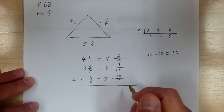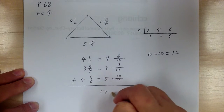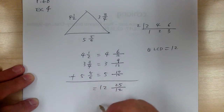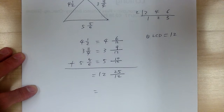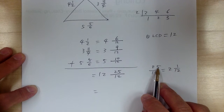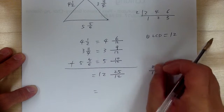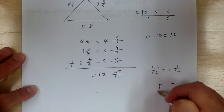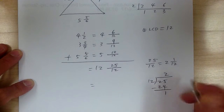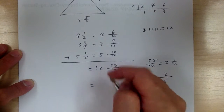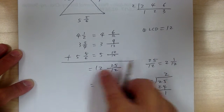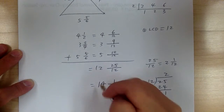Now add the whole numbers: 4 plus 3 is 7, plus 5 is 12. For the fractions: 6 plus 9 is 15, plus 5 is 25. So you have 25 over 12. Since 25 divided by 12 equals 2 remainder 1, that is 2 and 1 twelfth. The whole number fraction becomes 1 over 12 and the 2 carries over to the whole number sum of 12, making it 14. So the final answer is 14 and 1 twelfth.